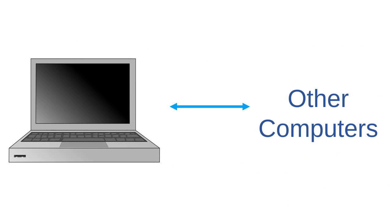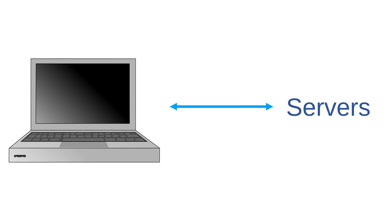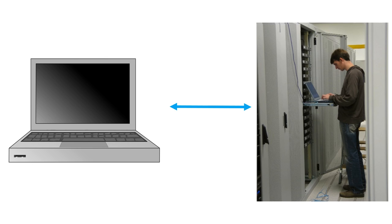When you use the Internet, what you're doing is using your computer to send information or requests for information to other computers. These computers that store and deliver information are examples of networking computers called servers. Here's an image of a technician who's examining a large network server.